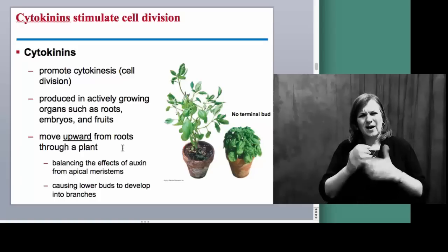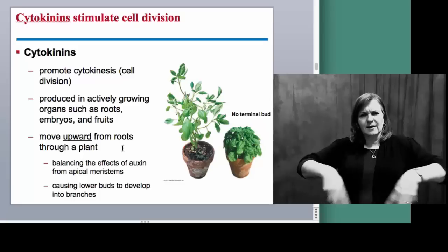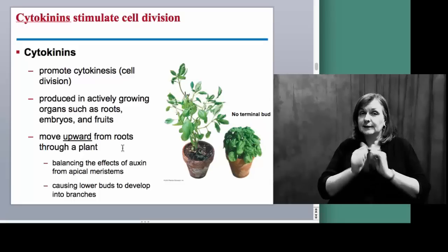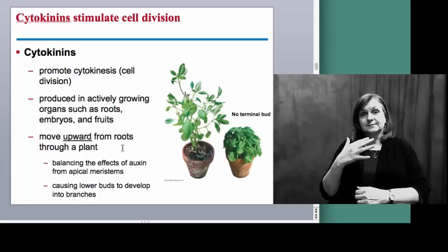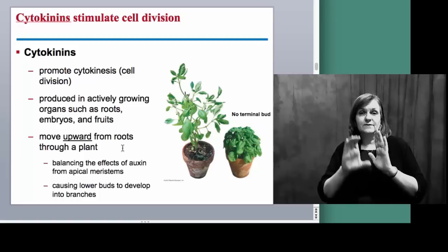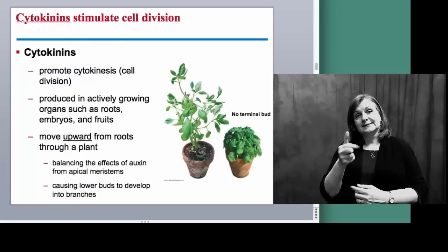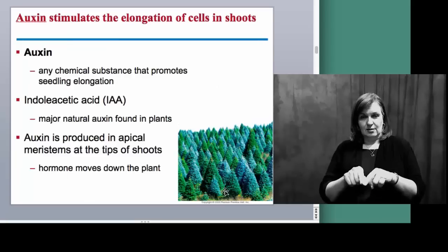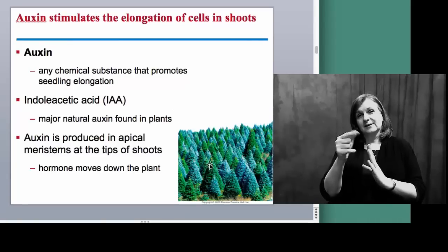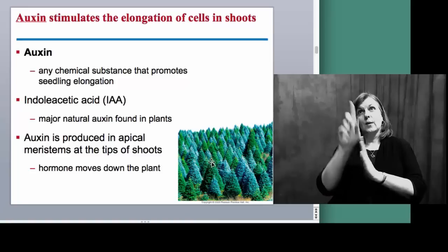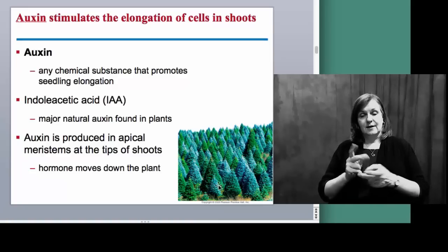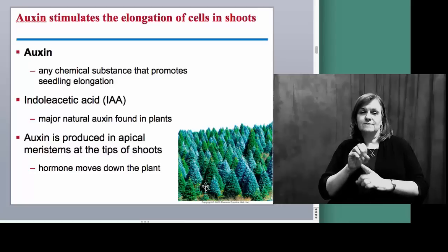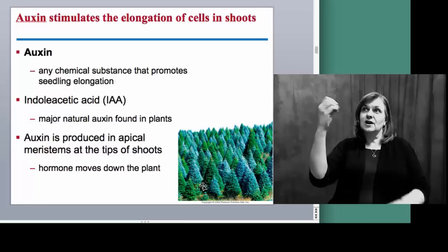Why would you want your plant to be wide at the bottom? Remember, plants are constantly competing for sunlight. If we go back to our auxin figure, we see these triangular-shaped trees. The auxin works at the peaks of these trees to help them grow taller, while the cytokinins work at the bottom to help them become wider — maximizing availability of sunlight to the plant.